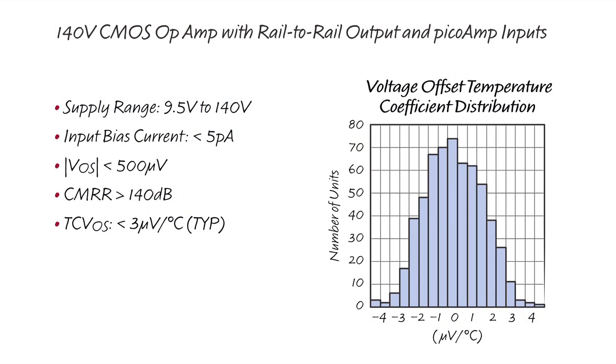The amplifier also features 140 dB of open-loop gain, 12 megahertz of gain bandwidth, 20 volts per microsecond of slew rate, and has a spot noise density of only 11 nanovolts per hertz.